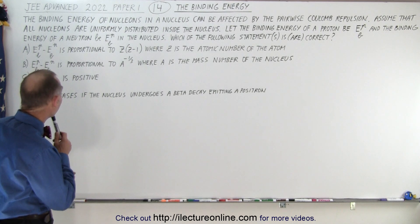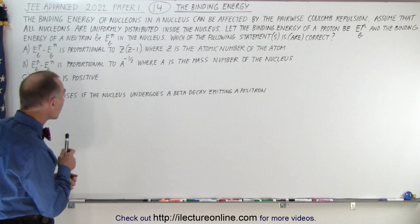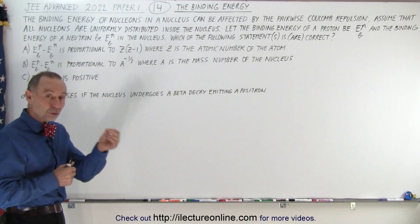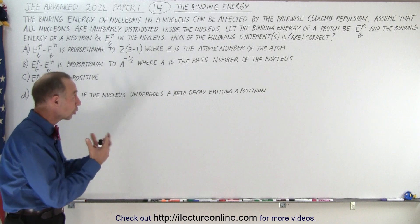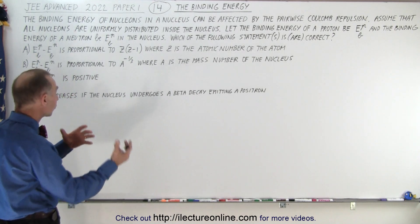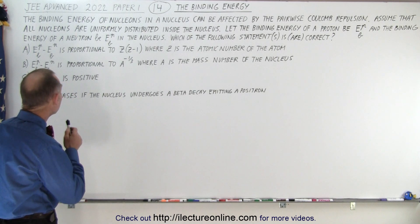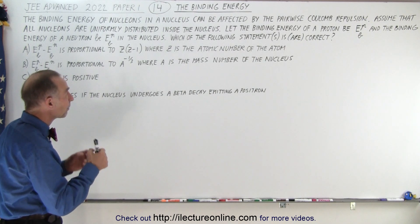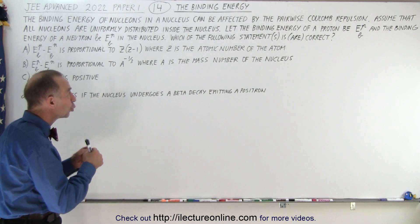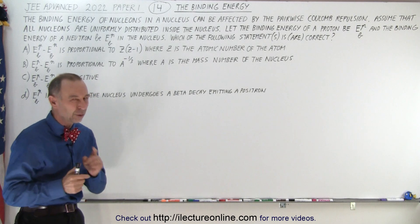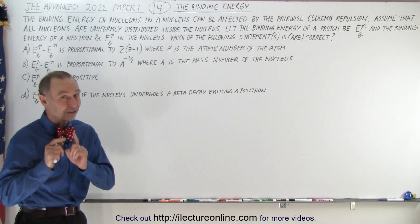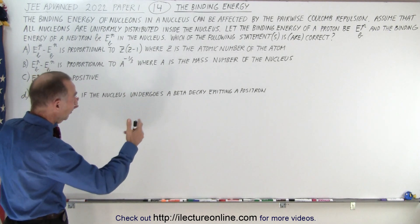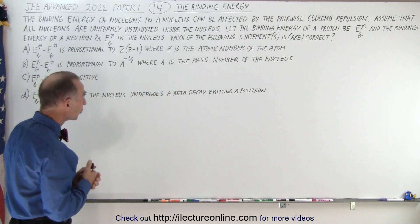It says here that the binding energy of nucleons — a nucleon can be either a proton or a neutron, so they're called nucleons. The binding energy of nucleons in a nucleus can be affected by the pairwise Coulomb repulsions. Of course, that's only true for the protons, not the neutrons. The neutrons do not repel each other. So that's the first place where it's confusing — they should have said protons.